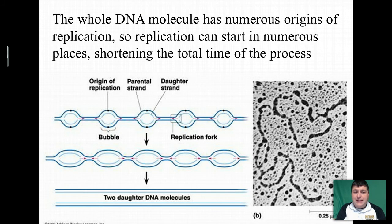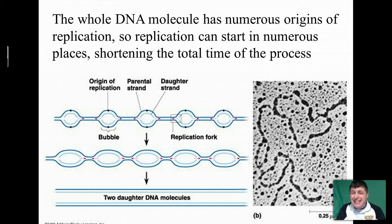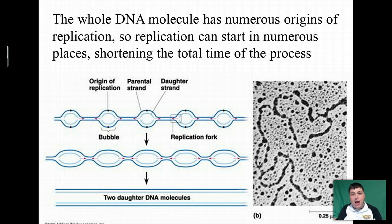Now on a DNA strand, there are numerous origins of replication, so replication is going to be happening at multiple sites on DNA. The reason for this is because DNA is so long — in order to quickly copy it, instead of starting at one end and going to the other, we start at multiple places.